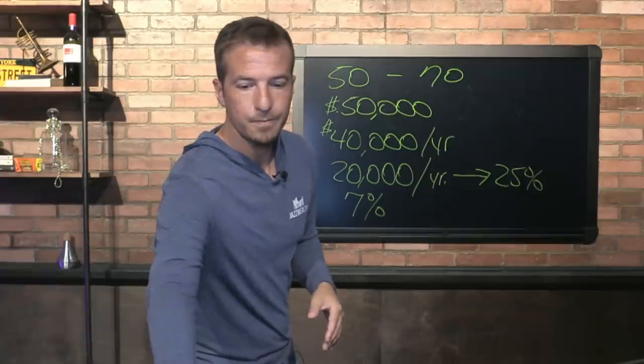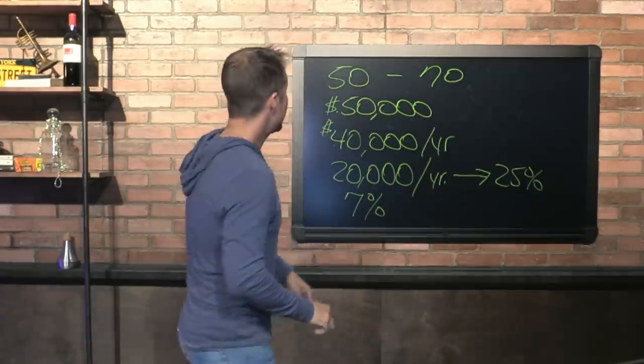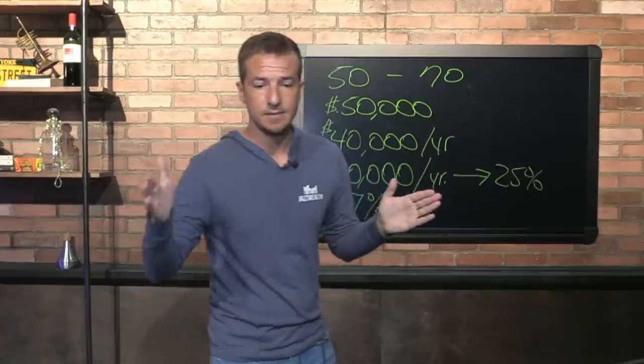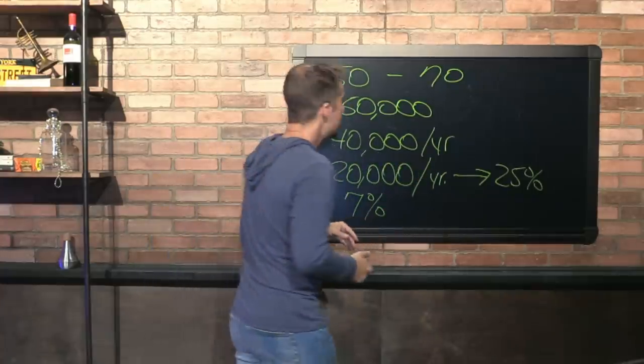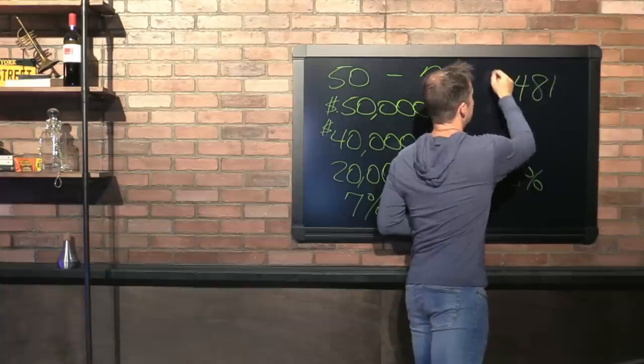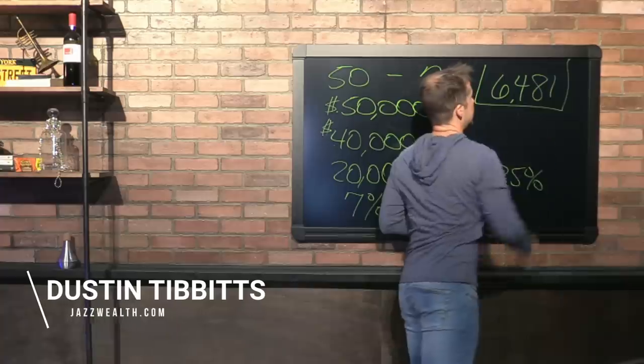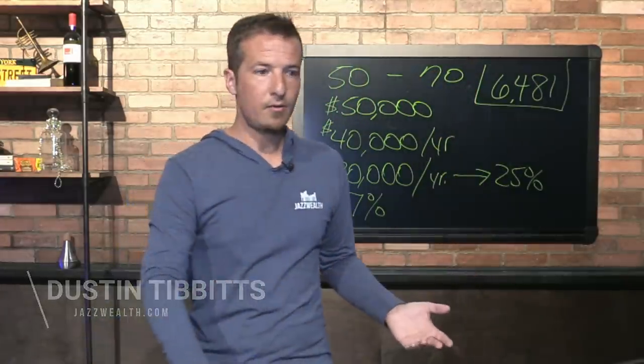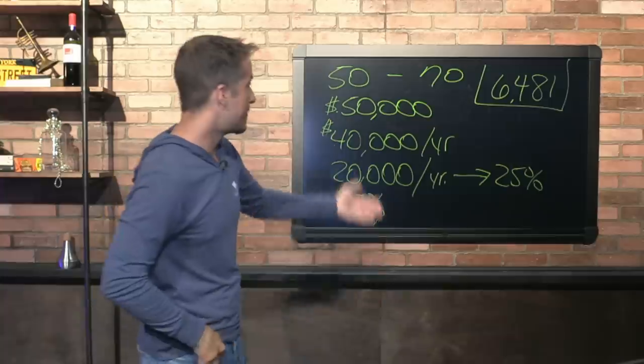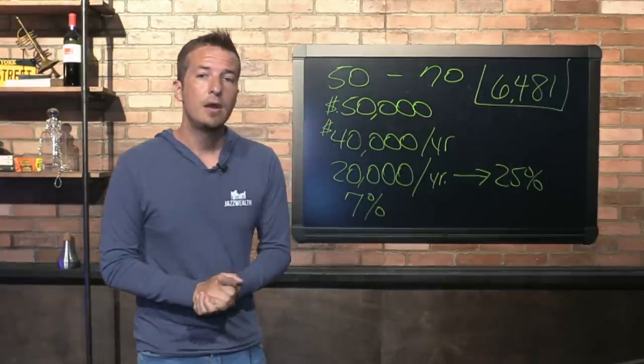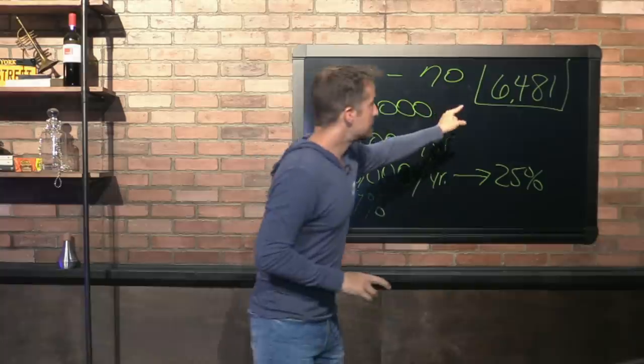So in this scenario, if we do it this way, this 50-year-old has to save in the next 12 months from today, the day that you're watching this, in the next 12 months they have to save $6,481 somehow to get started. That's not so bad, right? All of a sudden you look at that and you go, okay, well I thought I'd have to put away tons of money. Turns out I've only got to put $6,481. Here's the kicker.